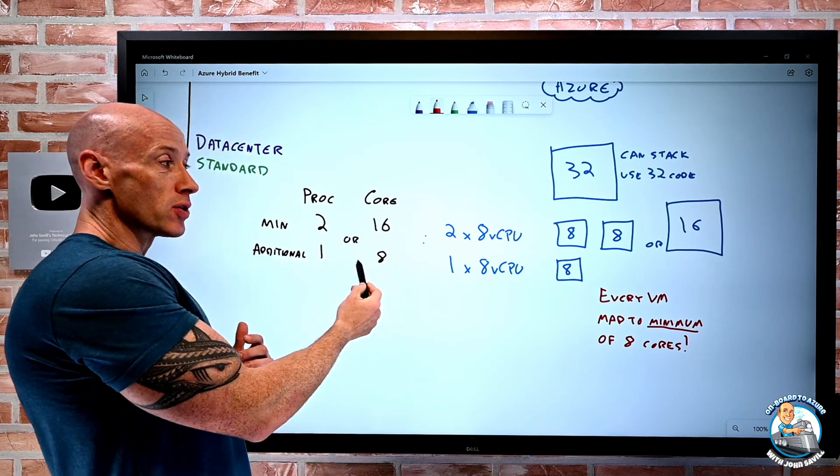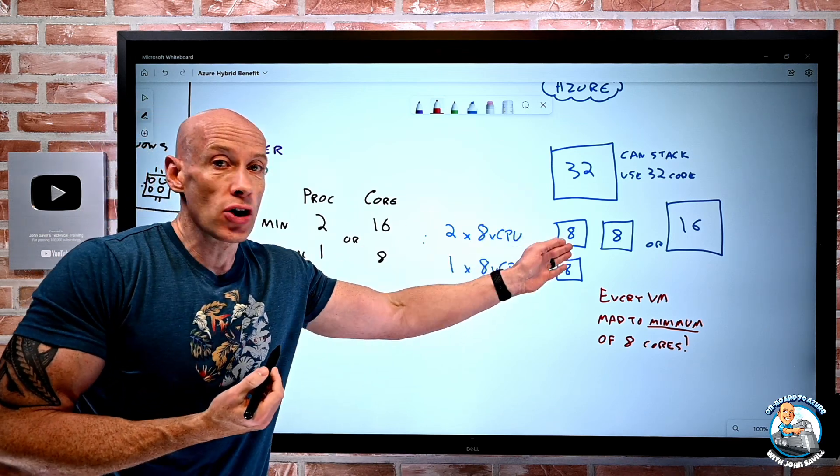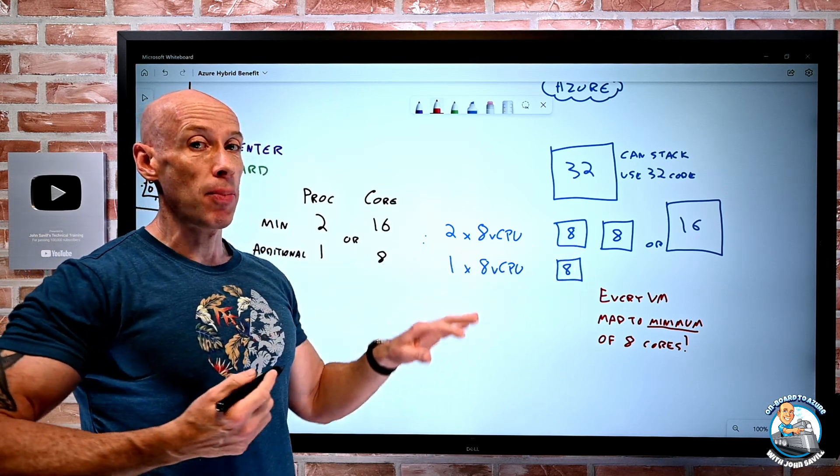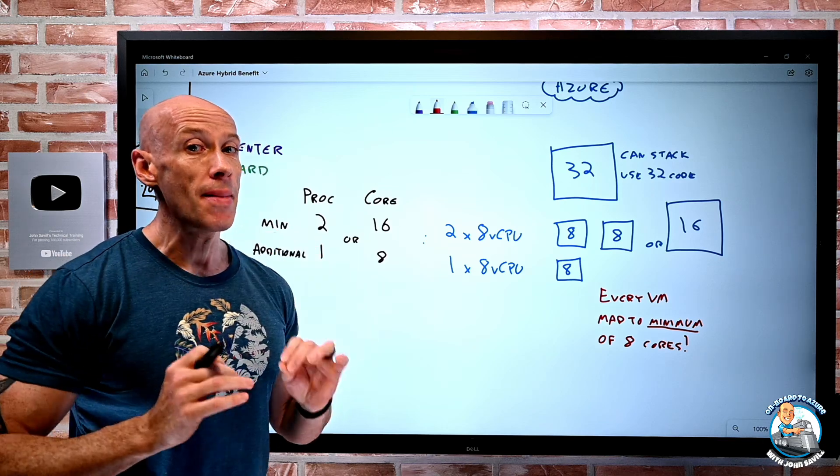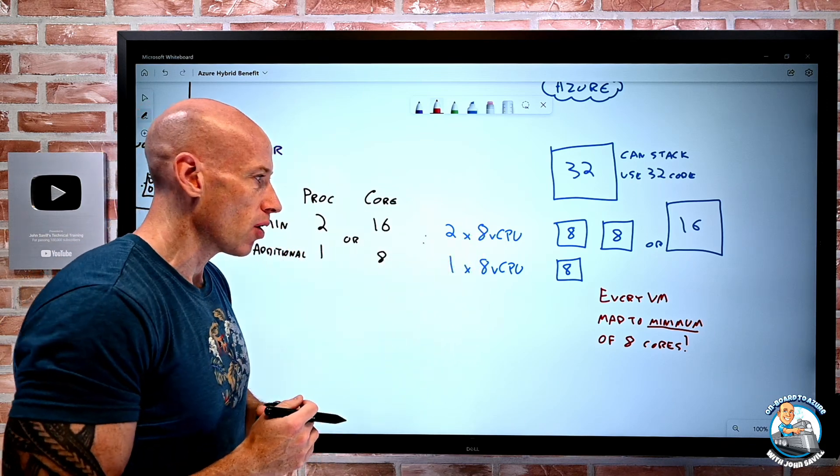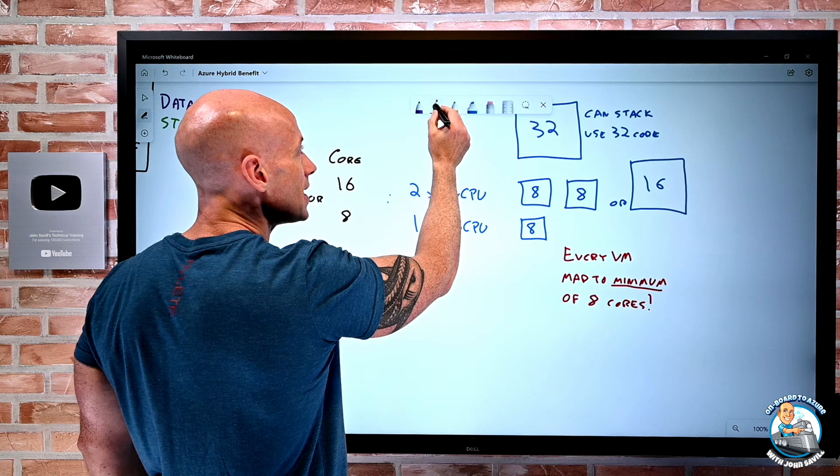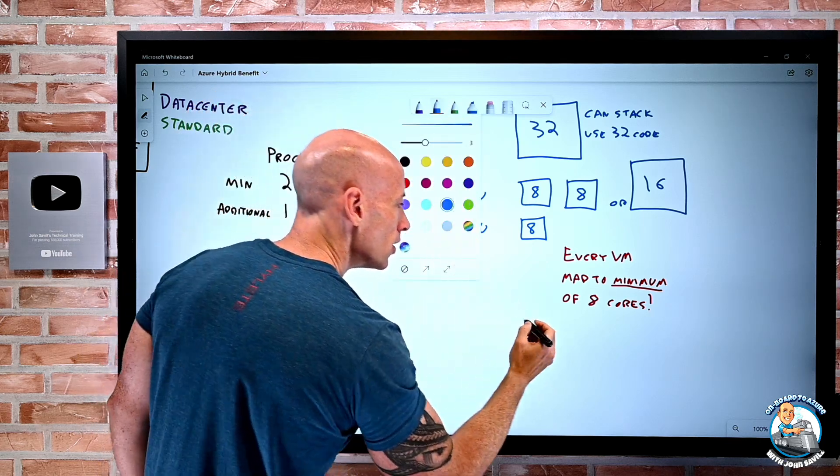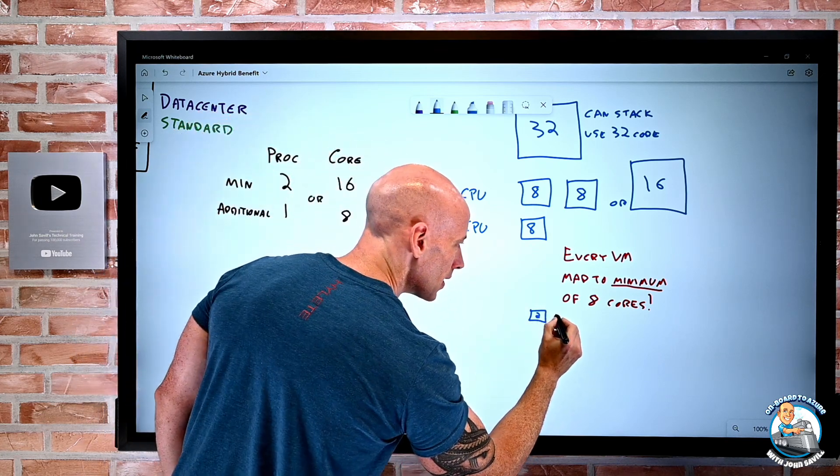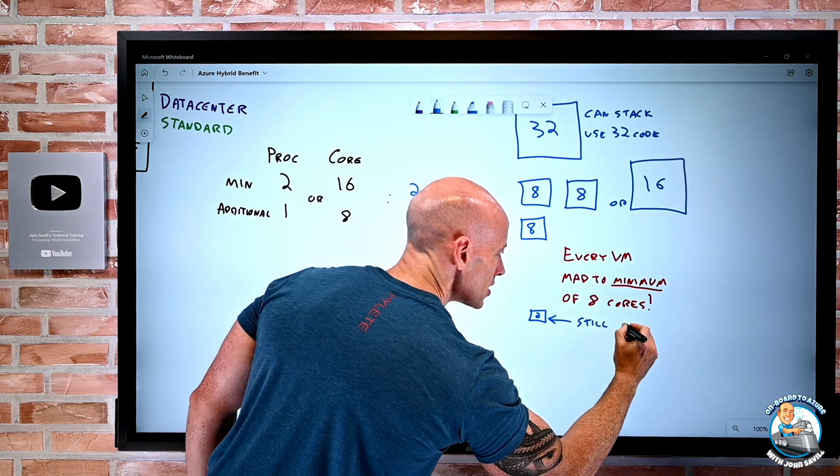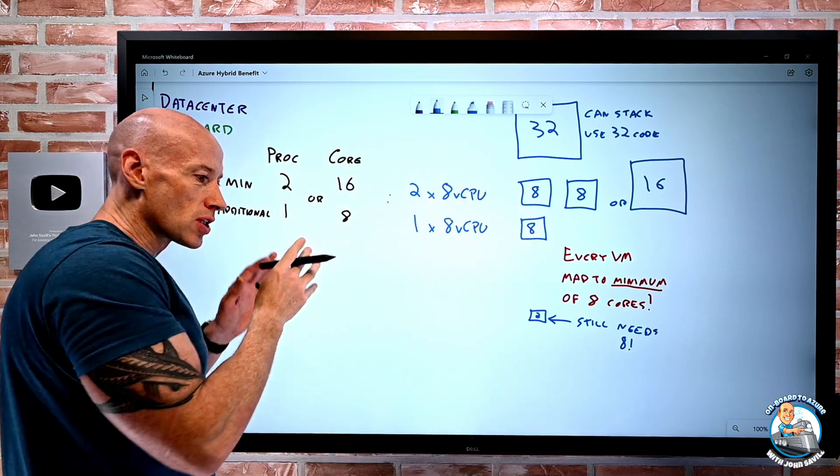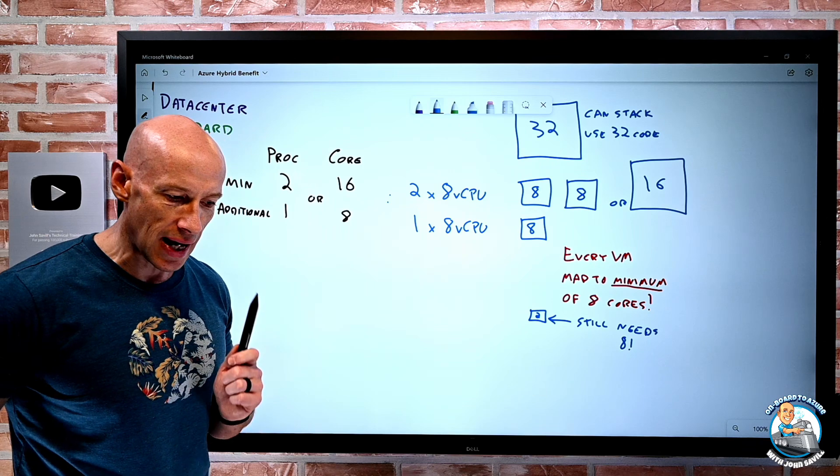I can't take eight cores here and create eight one virtual CPU VMs, or four two virtual CPU VMs. It doesn't work that way. Every VM I apply the Azure Hybrid Benefit to, at minimum, has to be eight. Then if it has more than eight virtual CPUs, it needs that appropriate number of cores. So in this example, if I created a virtual machine with two virtual CPUs, that still needs eight. It's still using up eight cores of license. This is a super important thing to understand.